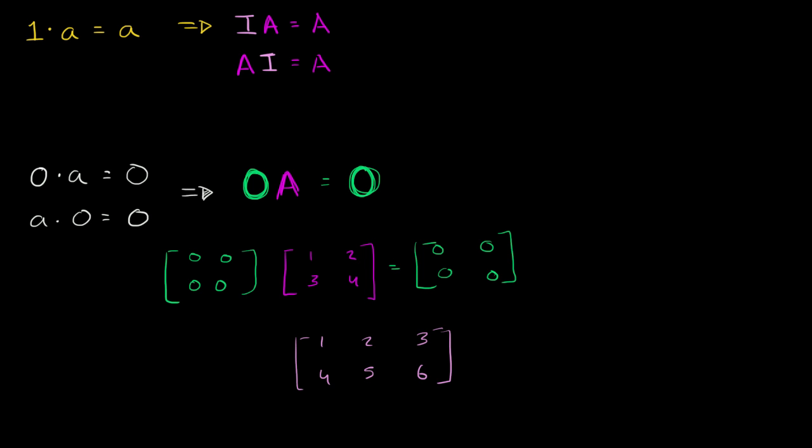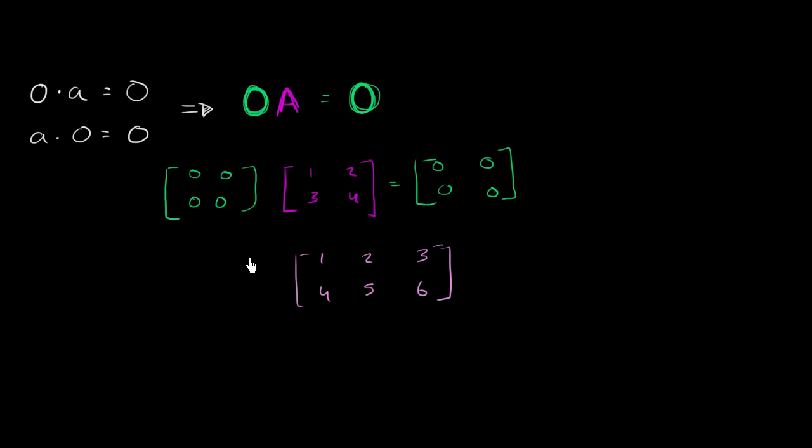So it's got to have two columns. But I could make it have three rows. So it could look like this, [0, 0, 0, 0, 0, 0]. And I encourage you to multiply these two. Pause the video right now and see what you get.